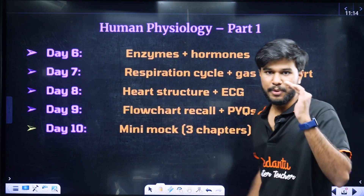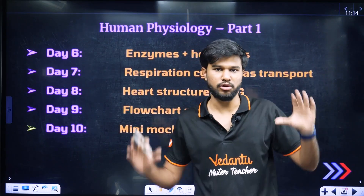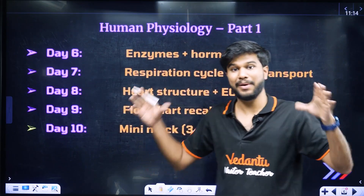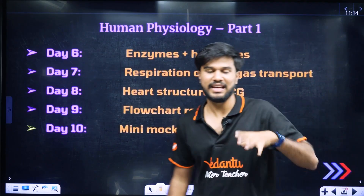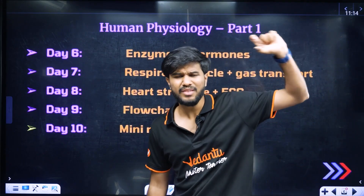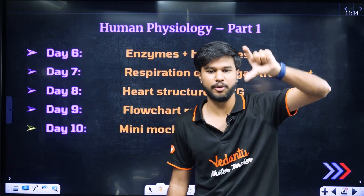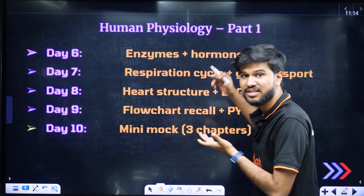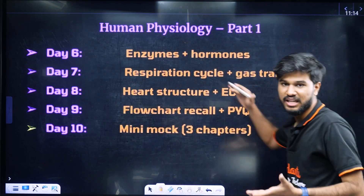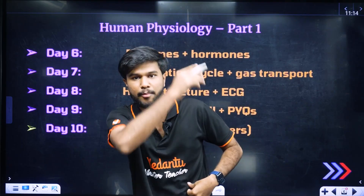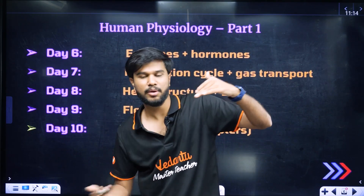In phase 2, we cover human physiology. First, we learn enzymes and hormones. Then we learn respiration — breathing and exchange of gases. After that, we learn body fluids and circulation: arch structure, ECG, flow chart, circulation, blood flow, and ventricle function.